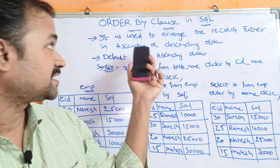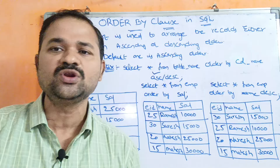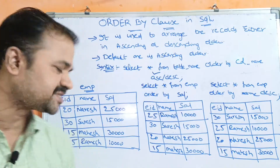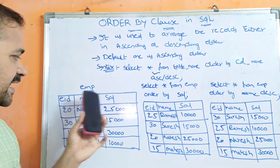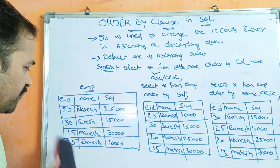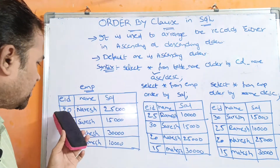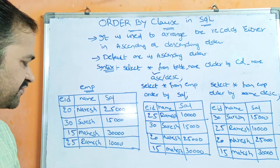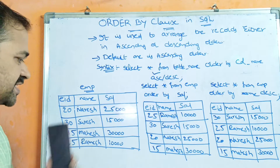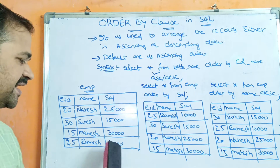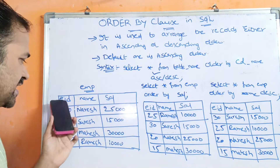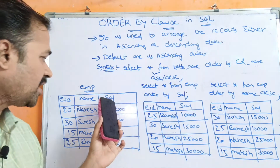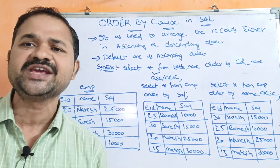Now let's discuss about the ORDER BY clause by taking a table. So here we have an employee table. The employee table contains 3 columns: employee ID, name, and sal. We have 4 records: first record — 20 Naresh 25000; second record — 30 Suresh 15000; third record — 15 Mahesh 30000; fourth record — 25 Ramesh 10000. Based on EID, name, or sal we can arrange the records in ascending or descending order.